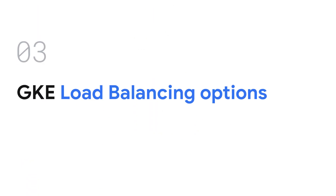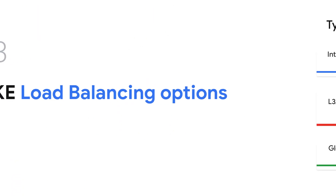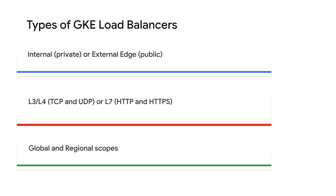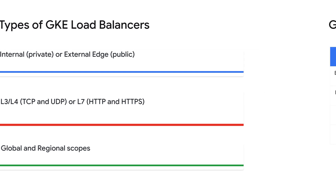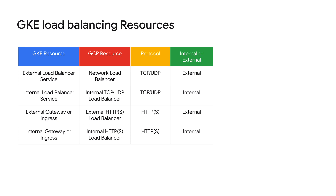Let's now transition to GKE-supported load balancers. GKE offers diverse load balancing options through the Ingress and Service API resources. These options include internal or external load balancing, layer 3, layer 4 supporting TCP and UDP protocol, or layer 7 supporting HTTP and HTTPS, and global and regional scopes. This table maps GKE objects to Google Cloud load balancers, where the GKE resource and GCP resource columns correspond to each other. The GKE resources are used to expose Kubernetes services to the outside world, while the GCP resources are the underlying load balancers that handle the traffic.